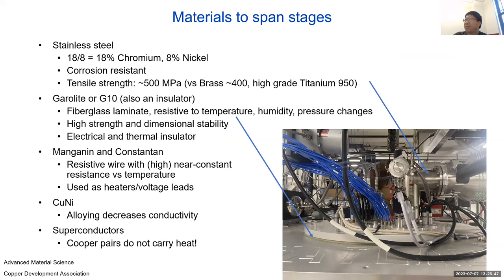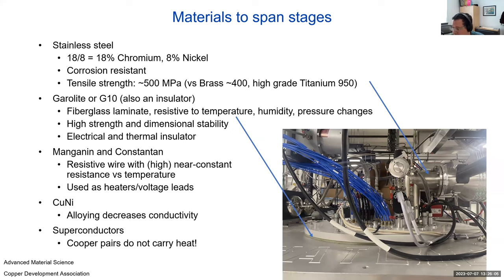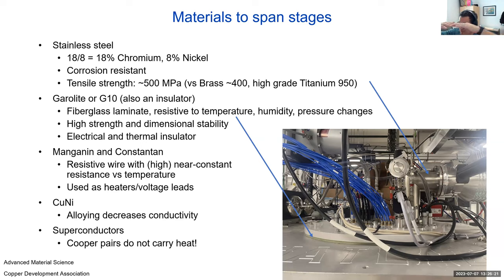A quick question: do you anneal OFHC copper after machining and does it matter? In principle it would be good to anneal it in a vacuum oven. However, annealing often makes it so soft that it won't hold its shape anymore. In some machines we take OFHC and weld it, which has the property of accidentally annealing it — you can bend them with your hands. In general, if it is a bendy, flexy thing, sure, anneal it. If it is something like a fridge plate that should hold a shape, no.